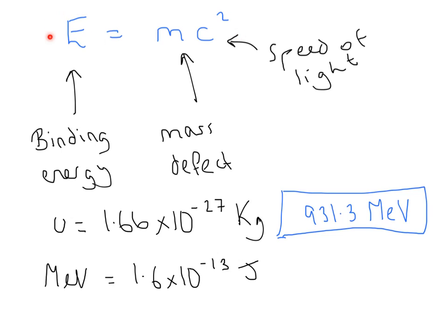So the E is your binding energy, and that's the total binding energy. And the M is your mass defect, and I'll explain why that is in a second. And your C is your speed of light in a vacuum.